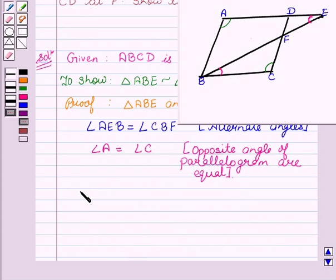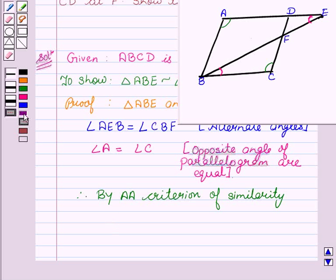Therefore, by AA criterion of similarity, triangle ABE is similar to triangle CFB. Hence proved.